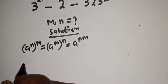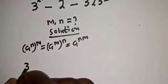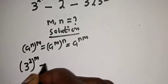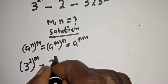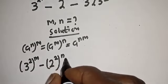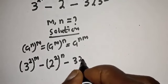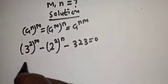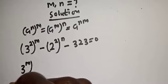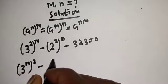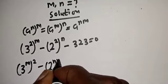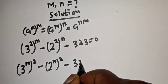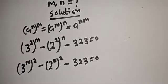Then, 3 raised to power 2m can be written as 3 raised to power 2, raised to power m, minus 2 raised to power 2, raised to power n, minus 323 is equal to 0. From this rule, this becomes 3 raised to power m, squared, minus 2 raised to power n, squared, minus 323 equals 0.